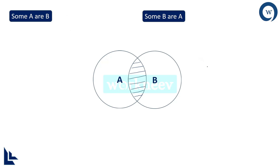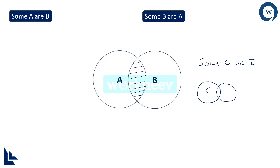The example I can take is the same chocolate and ice cream example. If I say some chocolates are ice creams, the Venn diagram would show chocolate and ice cream intersecting. This common portion is what 'some chocolates are ice creams' means.